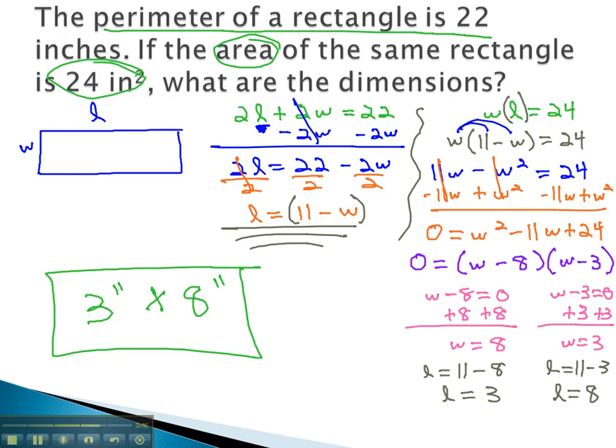When we are given the perimeter and the area, we set up two equations, one for each of them. And then we solve the perimeter equation for a variable and make a substitution.